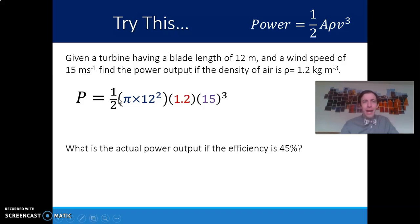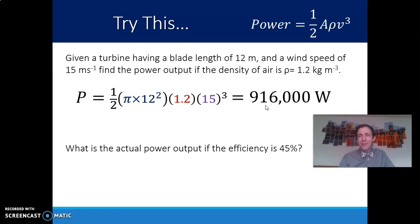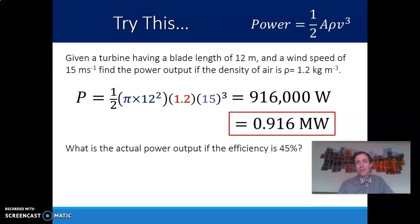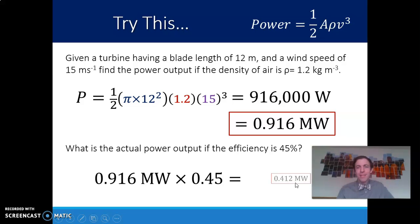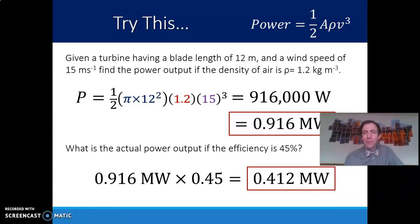If I plug in these values, knowing that area is going to be πr², I end up getting a value of 916,000 watts. That's a huge amount of power. Ultimately, no wind turbine is going to be able to get a perfect efficiency. That's actually the power of the wind. That's not necessarily the power of the wind turbine. So if I said that the efficiency was somewhere around 45%, all you'd have to do to figure out how much power the turbine actually produces is multiply this value by, you could also consider this to be in megawatts, such a large number. So you can multiply this megawatt number by 0.45, 45%, to get the power output is just under half of that original total.